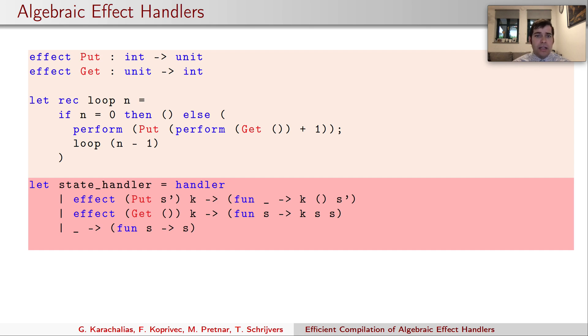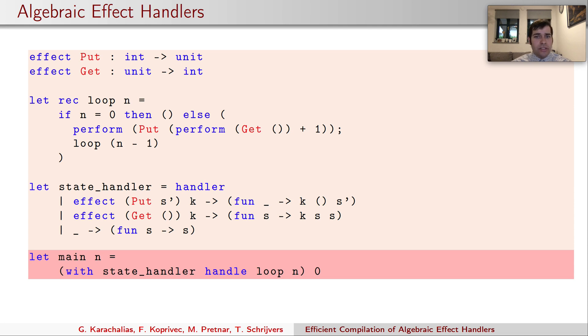This example handler encodes state in a simple state handler that wraps the continuation in a functional state. The return clause firstly transforms the whole computation into a function taking a state parameter. The effect clauses either continue the computation with the current value of state in the get clause or continue with the unit in set clause and pass the updated state along. We can then handle the loop function with the state handler and parameter n and get the final function that accepts an initial state and returns the final state.